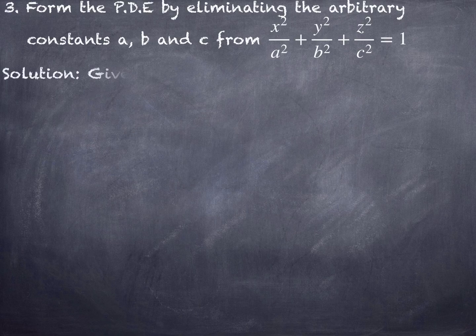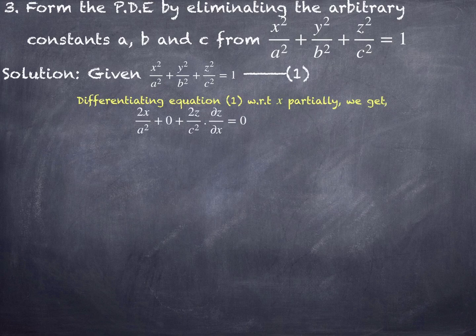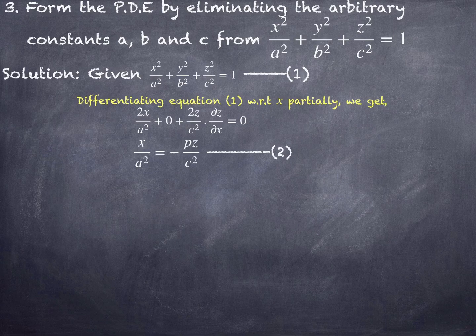Considering the given equation as number 1 and differentiating partially with respect to x: we get 2x/a², y terms vanish, and z² differentiates to 2z·(∂z/∂x) since z is a function of x and y. Simplifying gives x/a² equals −pz/c². Transferring x to the other side: 1/a² equals −pz/(xc²).